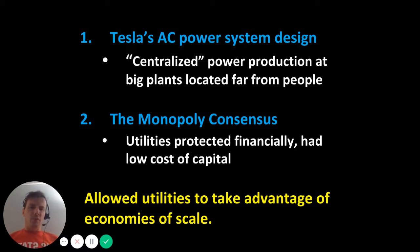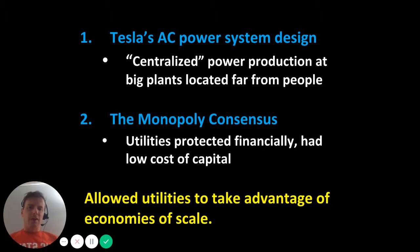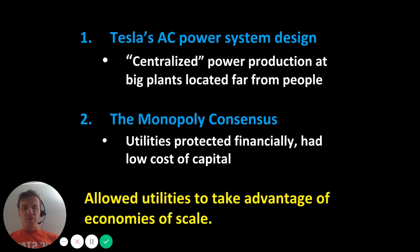This, coupled with the monopoly consensus — the realization that it made financial and economic sense to allow one utility over a certain geographical area to own and operate everything, protect those utilities from competition, and give them a legal pathway to covering their costs to maintain financial health and a lower cost of capital — allowed utilities to take advantage of tremendous economies of scale.